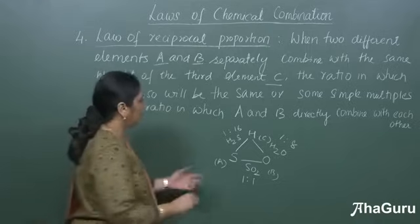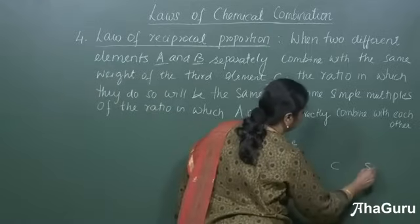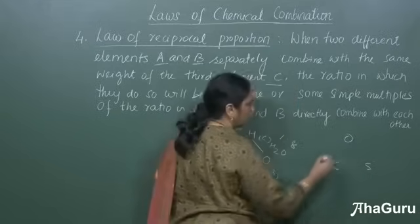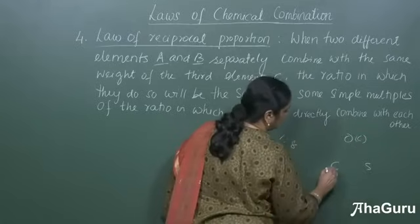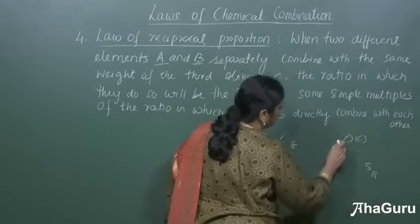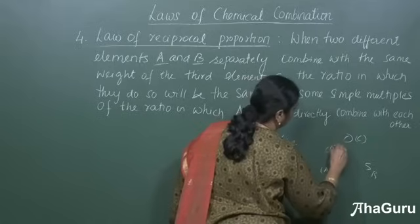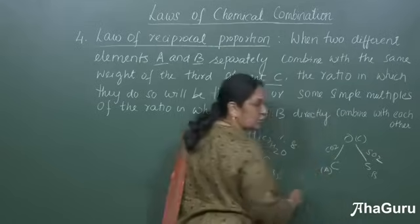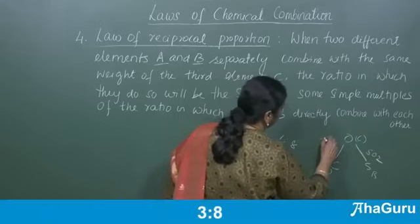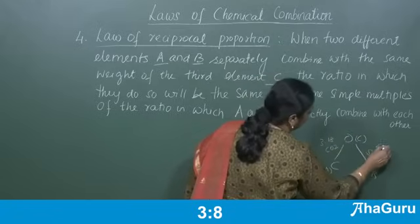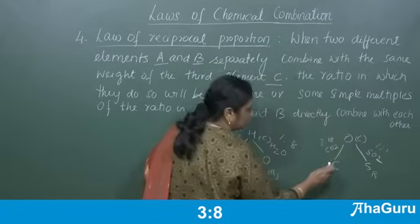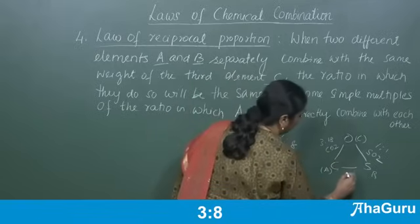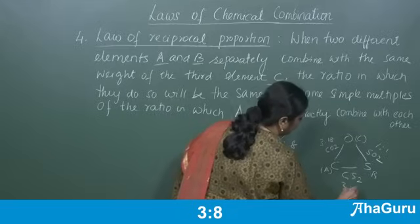Another example: let us take carbon and sulfur as A and B, combining with element C, which is oxygen. Carbon and oxygen combine to give carbon dioxide, and sulfur and oxygen combine to give sulfur dioxide. The ratio here is 3 to 18 for carbon dioxide and 1 to 1 for sulfur dioxide. If they separately combine, A and B also form a simple ratio — carbon disulfide, which is 3 to 16.